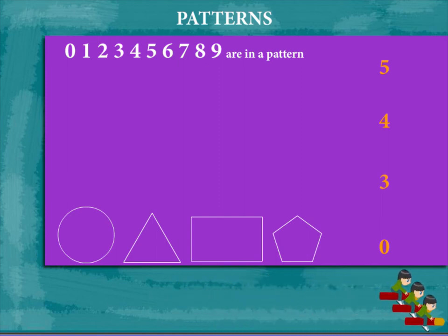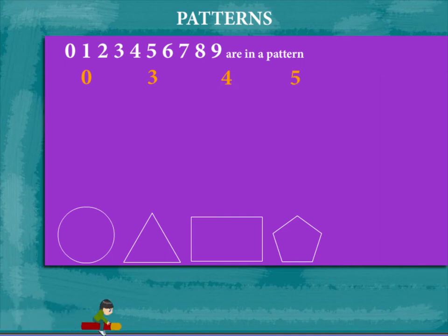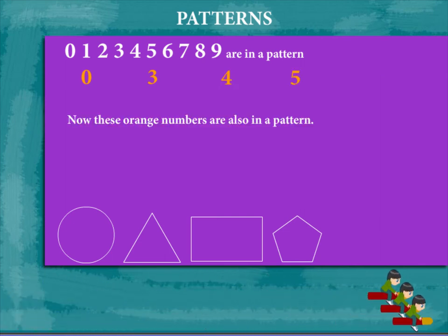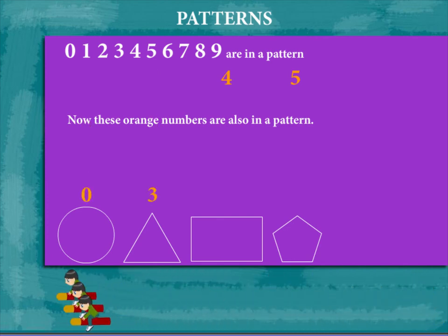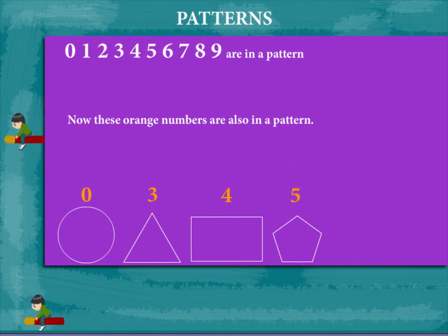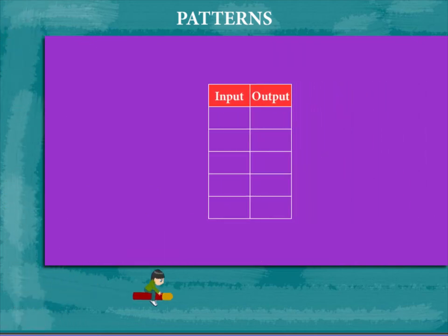Look, the numbers zero, one, two, three, four, five, six, seven, eight, nine are in a pattern. What about zero, three, four, and five in orange? They are also in a pattern. How? See the figure below: zero sides, three sides, four sides, and five sides. Let's see the input-output relation.